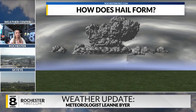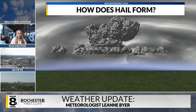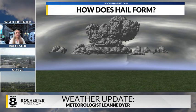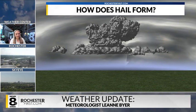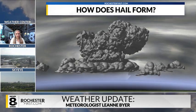And usually it happens within thunderstorms when it's warm out. So their big question was, how does it form so that when it's falling, it doesn't melt? So let's talk about it a little bit.